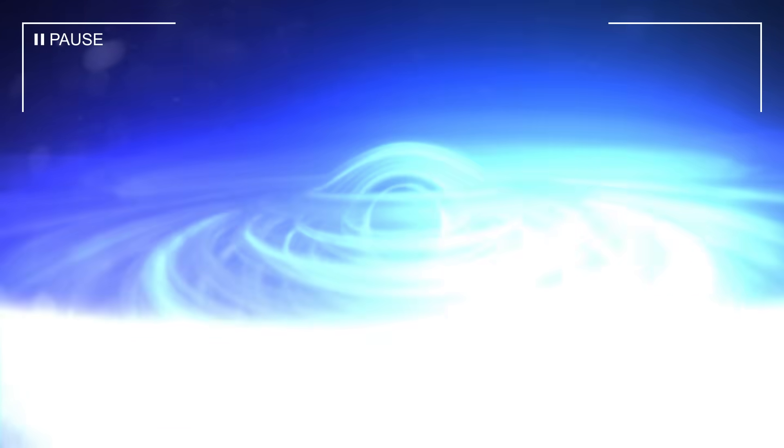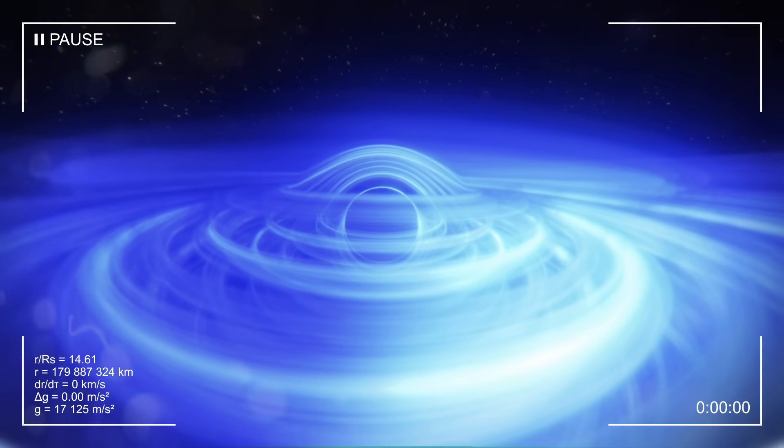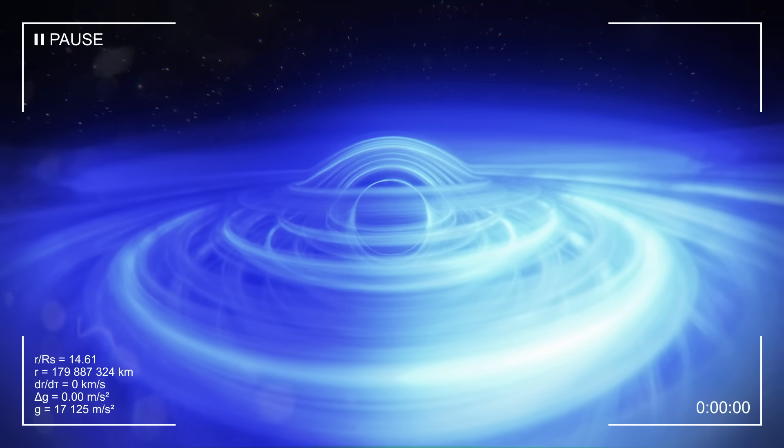However, despite the spacesuit, the disk still seems extremely bright. We can't distinguish anything. We will therefore imagine that our helmet has a visor, which helps reduce the brightness of the disk so that we can observe it in detail, as well as see the stars in the background.